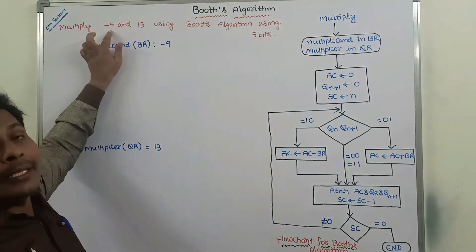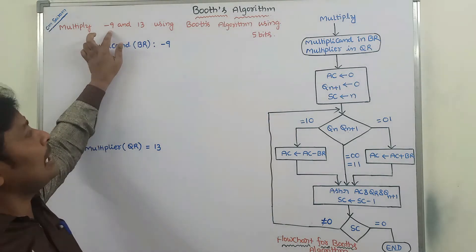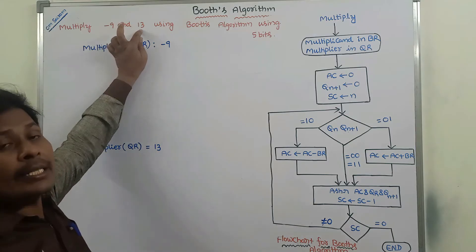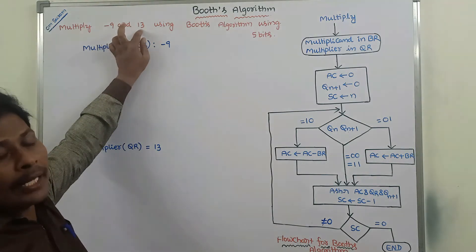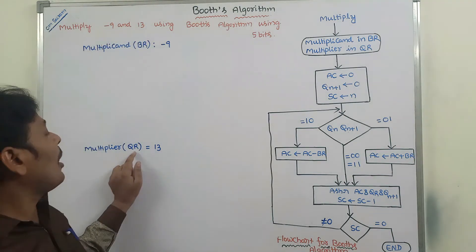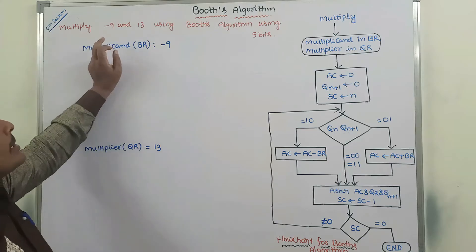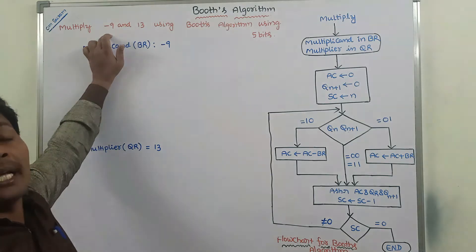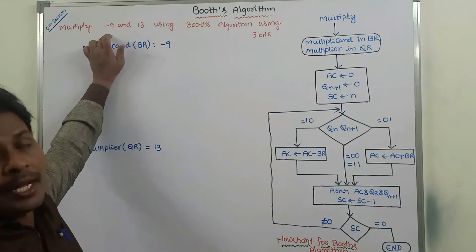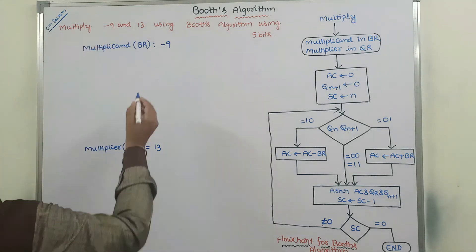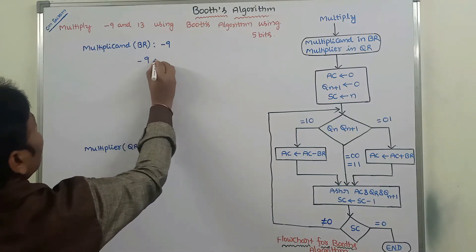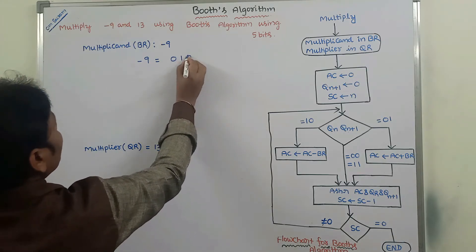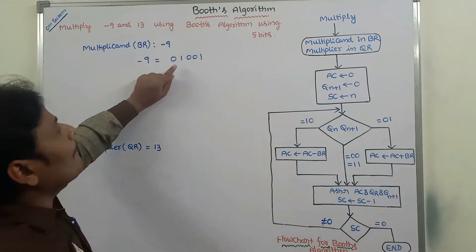Here, minus 9 is called as multiplicand. That multiplicand is stored in the BR register. Whereas, 13 is called as multiplier. That multiplier is stored in the QR register. Among these two numbers, minus 9 is the negative number. Negative numbers can be represented in 2's complement representation in terms of 5 bits. Now, minus 9 can be represented in binary form. The binary form of 9 is 0, 1, 0, 0, 1.